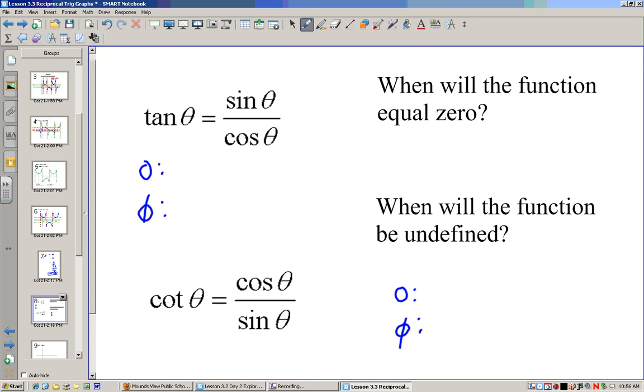So let's label all the points where sine would be zero. Well it would be at zero, 180, 360, and so on and so on. And it would also be in the negative direction. So we could just say that it's 180 times n given that n is some integer.